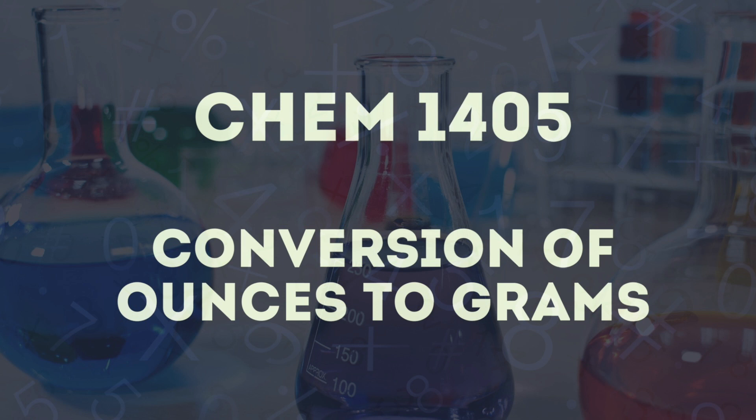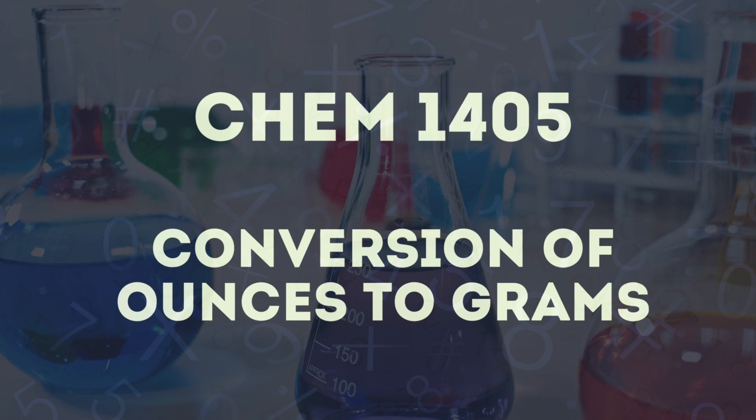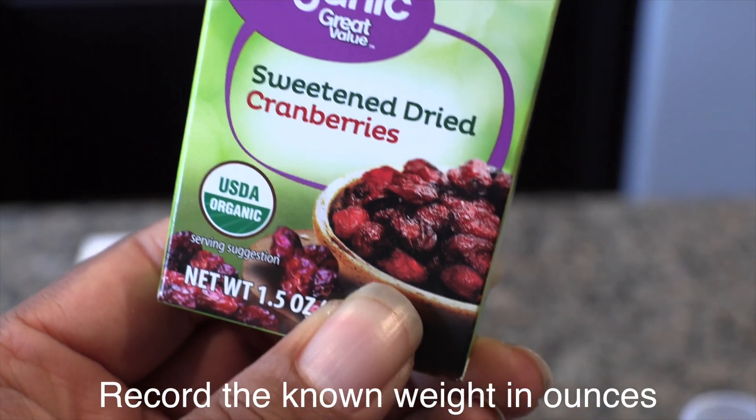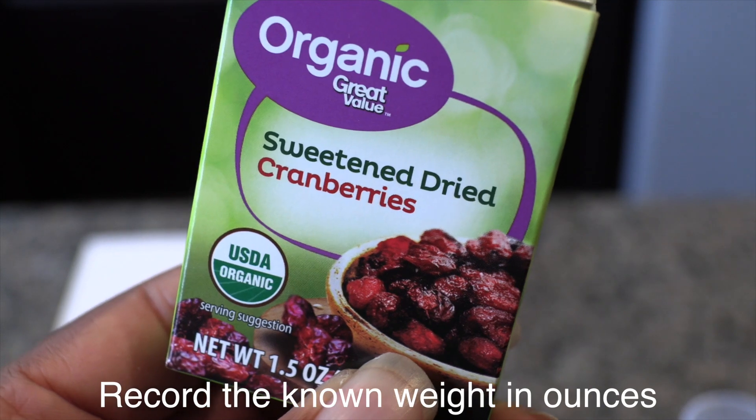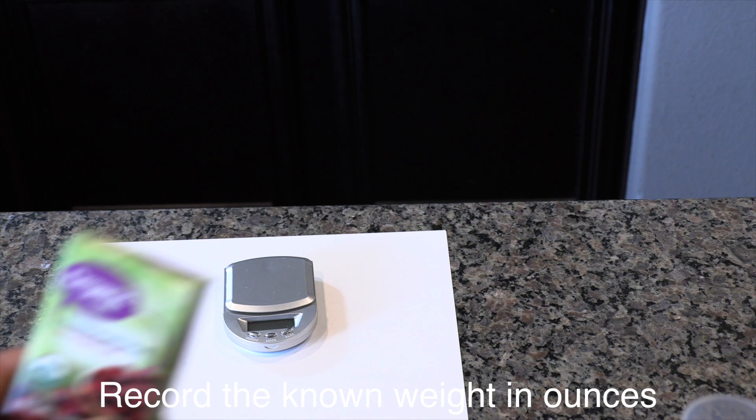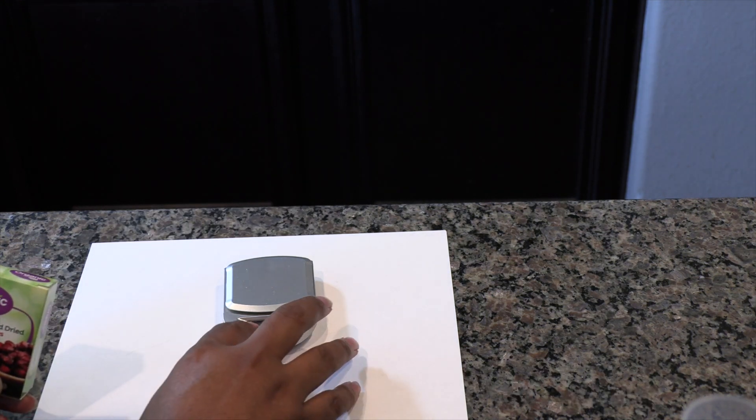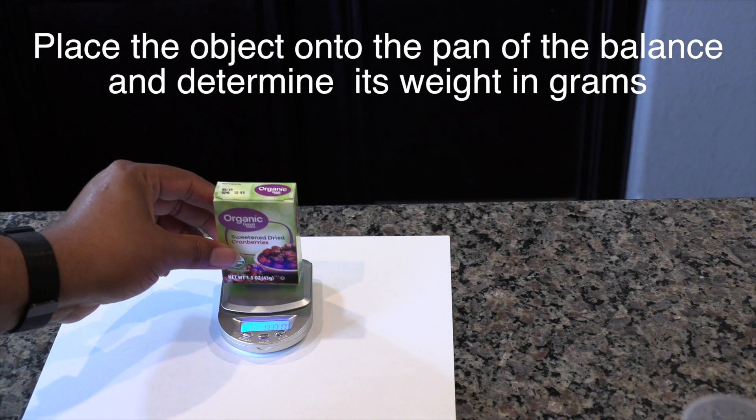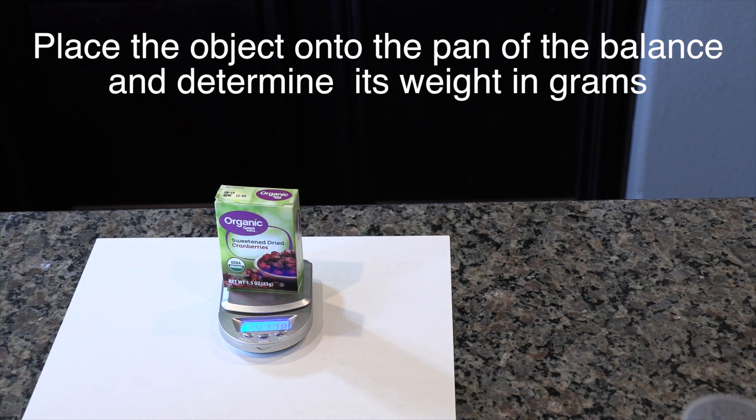Conversion of ounces to grams. You'll need a balance capable of weighing in grams and an object of known weight in ounces. Record the known weight in ounces of the object that you chose to use. Now place the object onto the pan of the balance and determine its weight in grams.